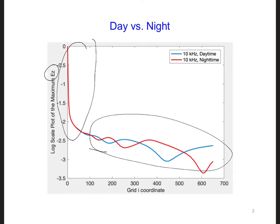At this point in our discussions, we've talked about three of the four sides of the FDTD grid. We talked about the left side, which is azimuthally symmetric. We talked about the top, which is the ionosphere. And we talked about the right side of the grid, which is the thick PML. Before we finish this design challenge, let's discuss the bottom side of the grid, which right now is the surface of the earth.